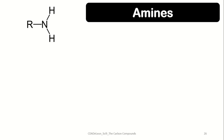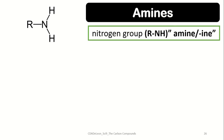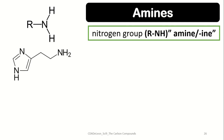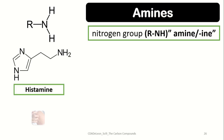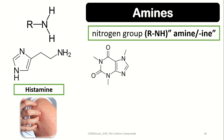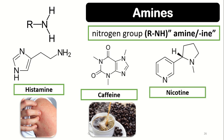Now let us go to functional groups containing nitrogen atoms, starting with amines. Amines contain the nitrogen group with a hydrogen bonded on it, and are named using the suffix -amine or -ine. Examples include histamine, which causes different allergic reactions; caffeine, the compound found in coffee; and nicotine, found in cigarettes.